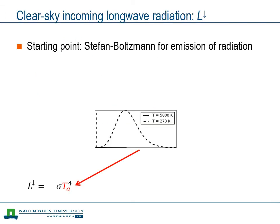First we're going to have a look at the simple situation where we only have a clear sky — no clouds. Our starting point would logically be the Stefan-Boltzmann equation, because the atmosphere has a temperature above absolute zero, so it will emit radiation. A typical temperature of the atmosphere would be somewhere around 270, 280, 290 Kelvin.